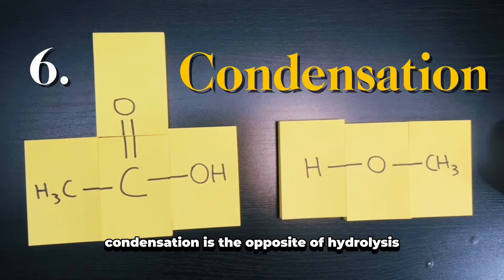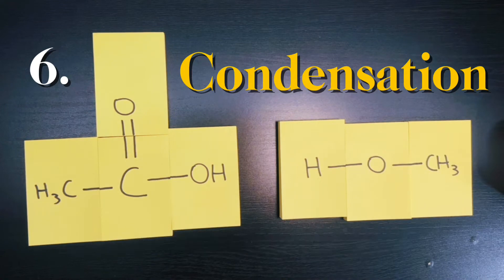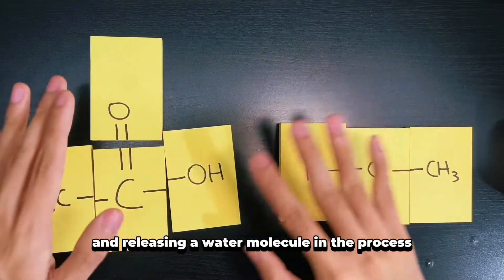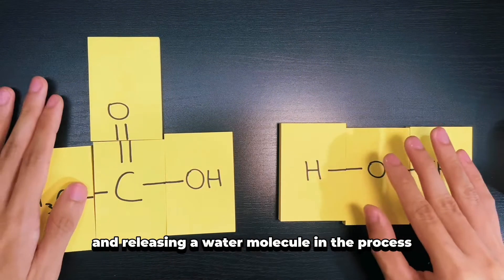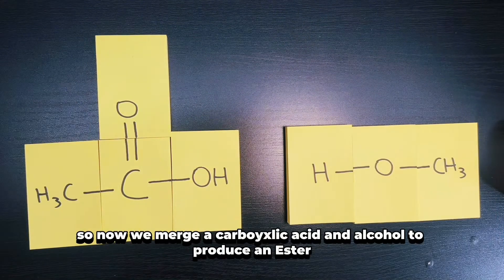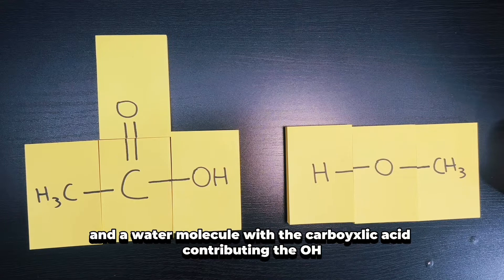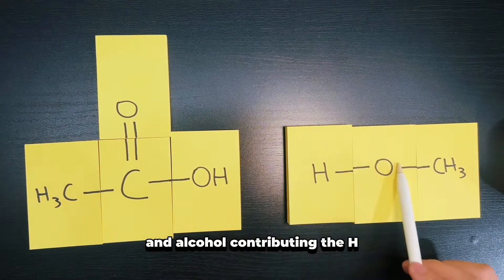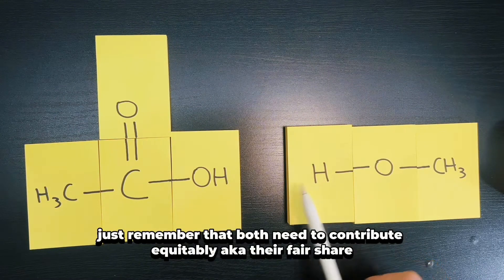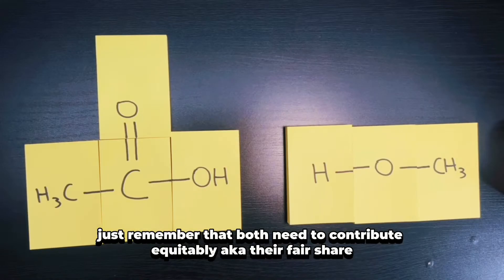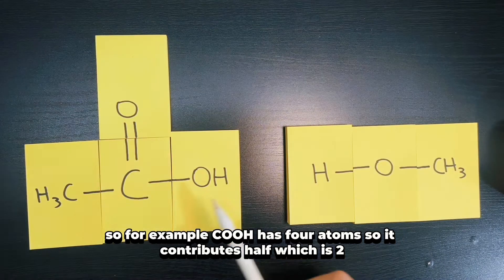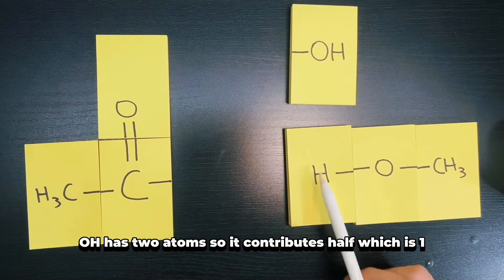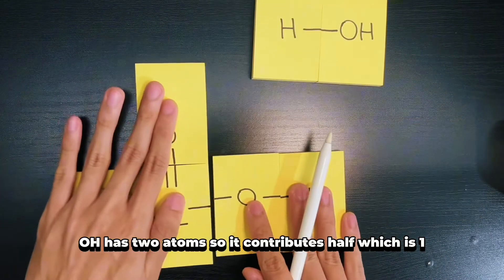Just like the oxidation and reduction relationship, condensation is the opposite of hydrolysis. Instead of using a water molecule to break something apart, we are now merging substances together and releasing a water molecule in the process. Now we merge a carboxylic acid and alcohol to produce an ester and a water molecule with the carboxylic acid contributing the OH and the alcohol contributing the H. Just remember that both need to contribute equitably—their fair share. For example, COOH has four atoms so it contributes half which is two; OH has two atoms so it contributes half which is one.